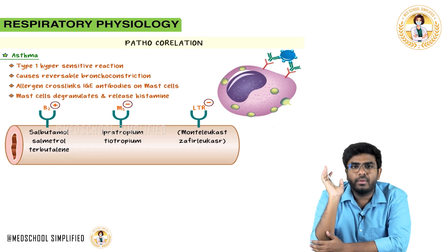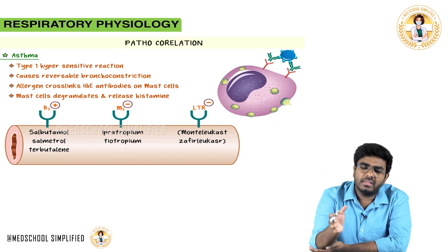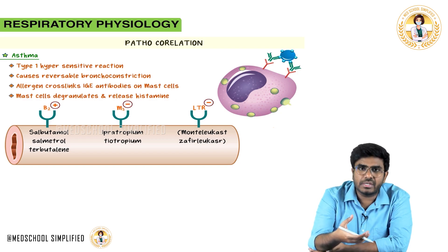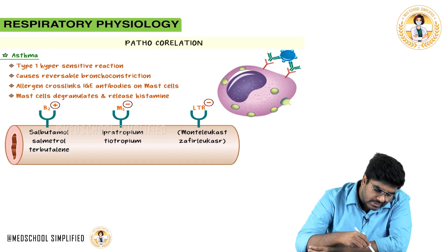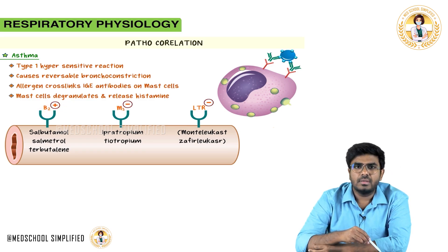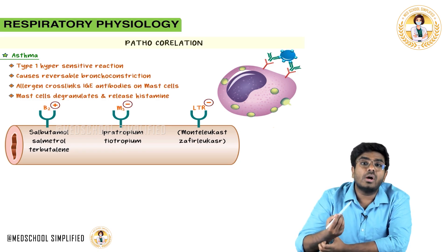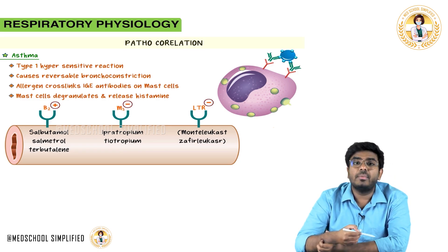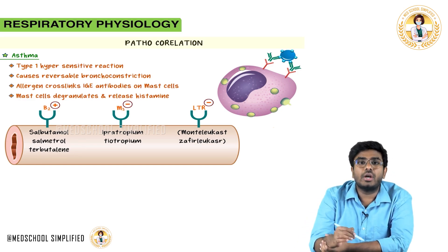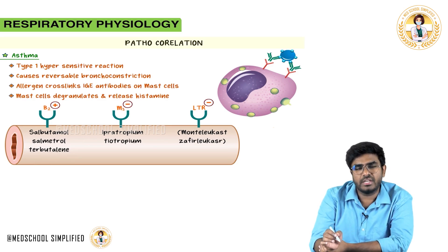To treat asthma, we need bronchodilation. Beta-2 receptors on the bronchus are sympathetic receptors — stimulating them achieves bronchodilation. Beta-2 agonists like salbutamol, salmeterol, and terbutaline stimulate the beta-2 receptors and cause bronchodilation.